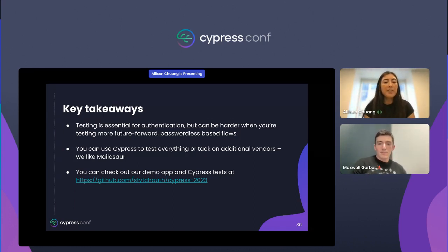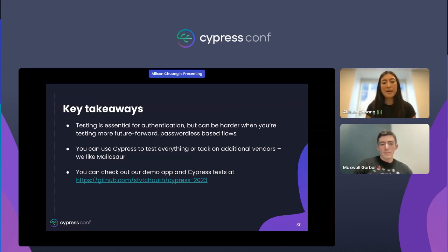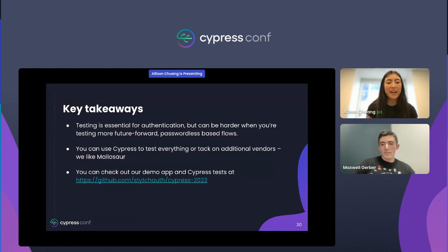And with the help of additional vendors like Mailasaur, you can easily access the external resources required for passwordless methods like email magic links and SMS OTPs. Finally, want to try out testing passwordless auth yourself? Check out our demo app and example Cypress tests at github.com.